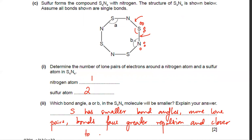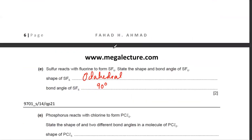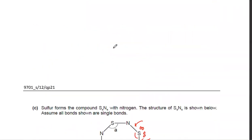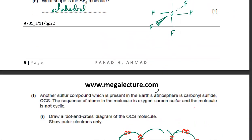For SF6, the shape is octahedral as discussed. The bond angles are all 90 degrees — one bond on top, one on the right, one on the left, one at the bottom, one behind, and one in front, all at 90 degrees to each other.